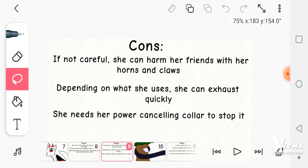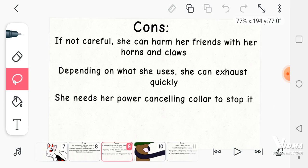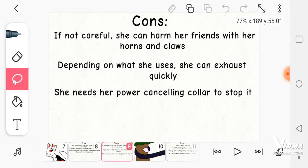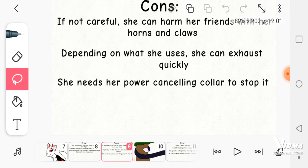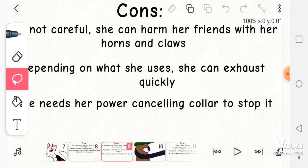The cons. If not careful, she can harm her friends with her horns and claws. Two, depending on what she uses, she can exhaust quickly. And three, yeah I need to go back to kindergarten so I can count. And three, she needs her power-canceling collar to stop it because she can't control it well at all.